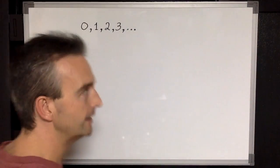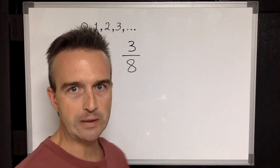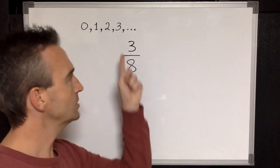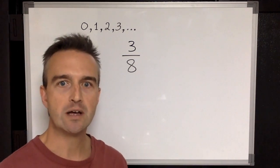So for example, a fraction looks like... yes, we have two numbers separated by a bar written vertically. The number on top is called the numerator, and the number on the bottom is called the denominator.